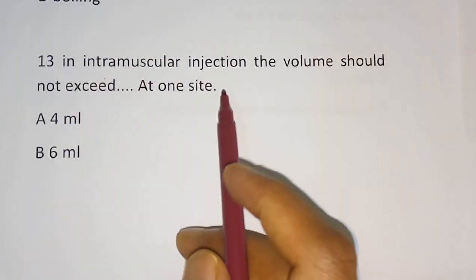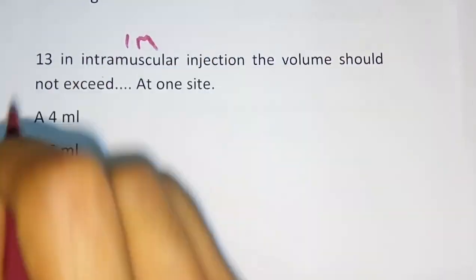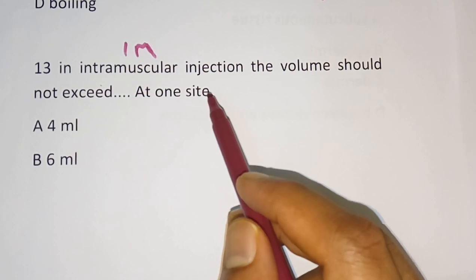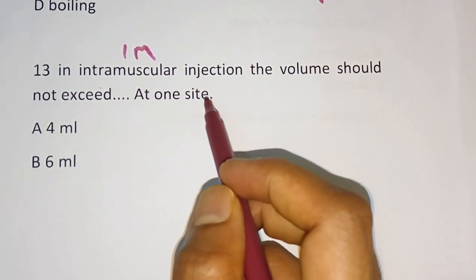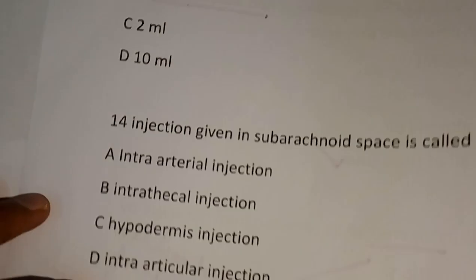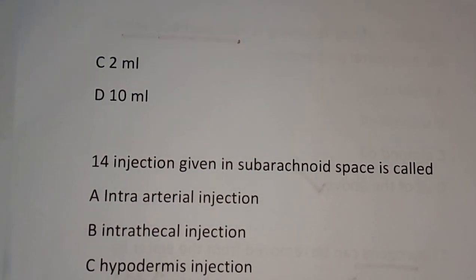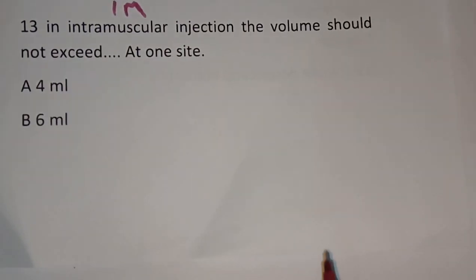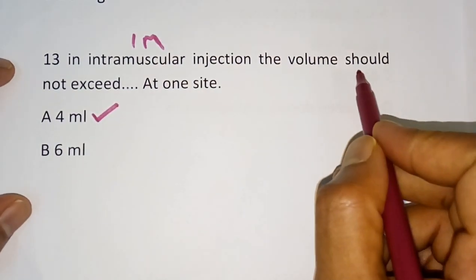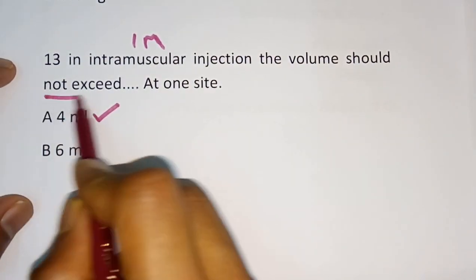Question 13: In intramuscular (IM) injection, the volume should not exceed how much at one site? Options: 4 ml, 6 ml, 2 ml, 10 ml. The correct answer is 4 ml. For IM injection, the volume should not exceed 4 ml at one site.